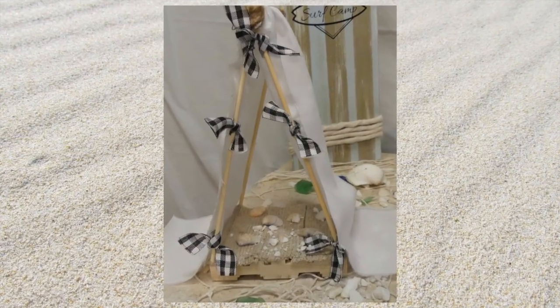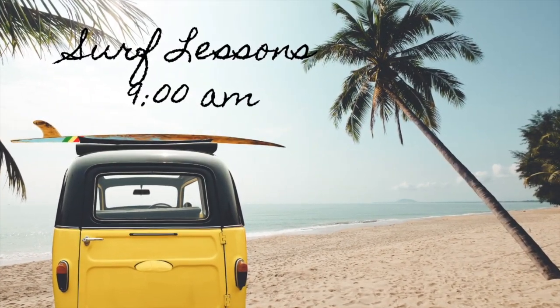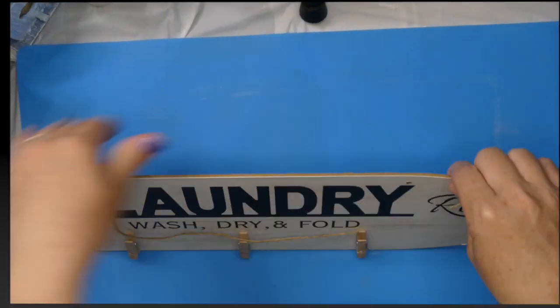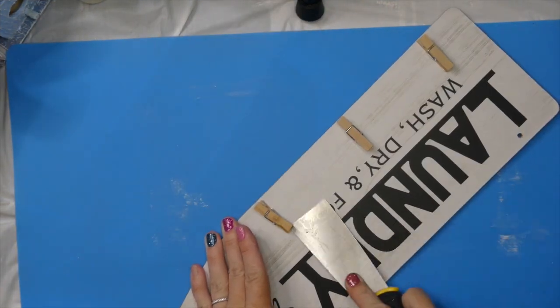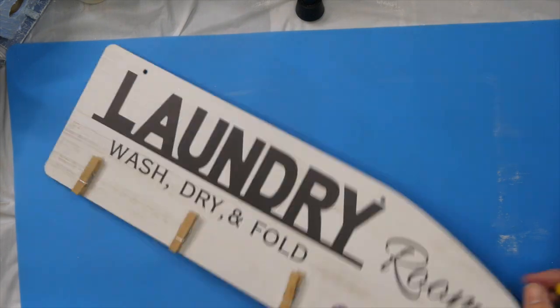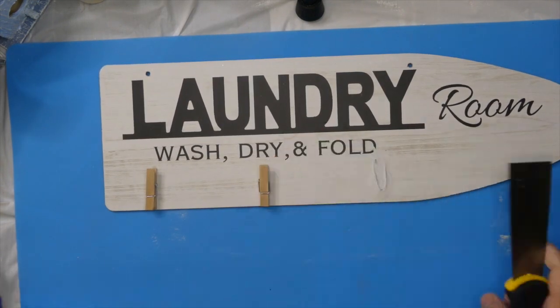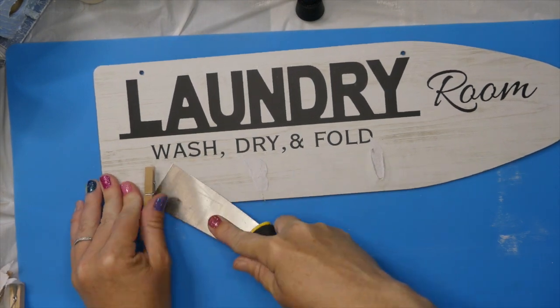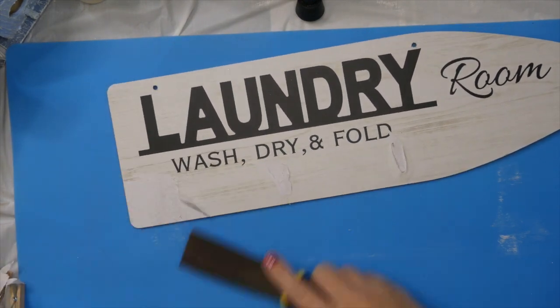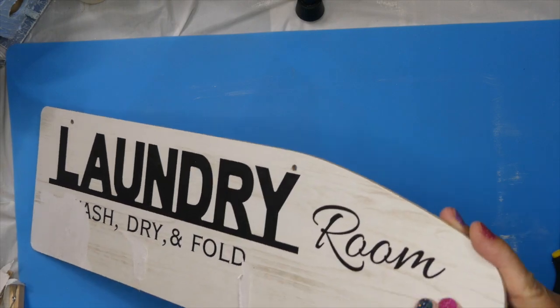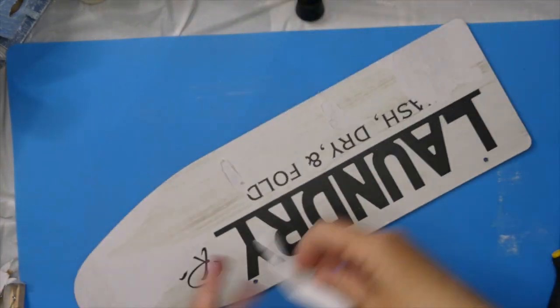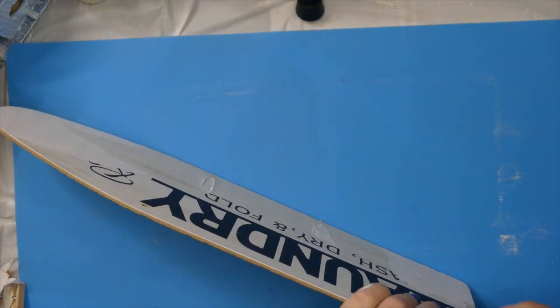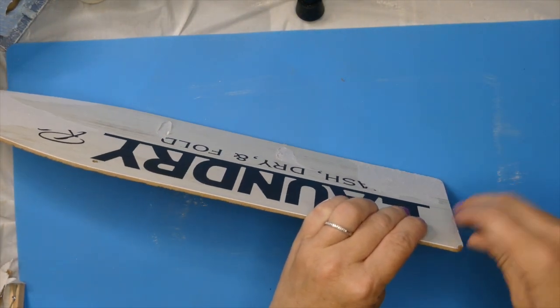I just think this is so cute. For the next project, we can't have a beach camp without a surfboard. We're taking this laundry room sign from Dollar Tree that's supposed to be in the shape of an ironing board, but it always kind of looked like a surfboard to me.